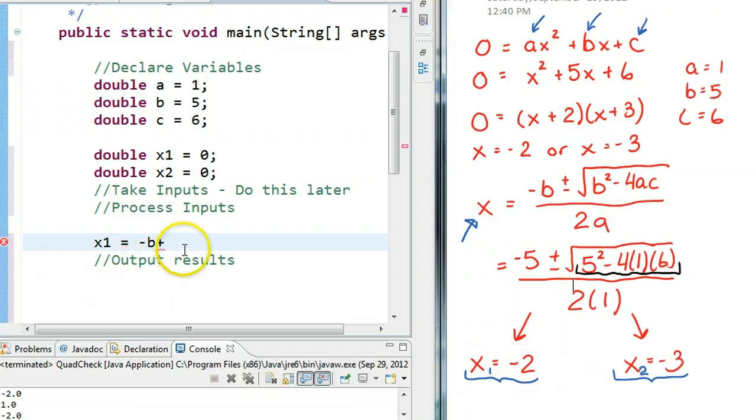So, what I'm going to do is I'm going to use the built-in math function. So, I'm going to say math.sqrt, which is the square root operation.